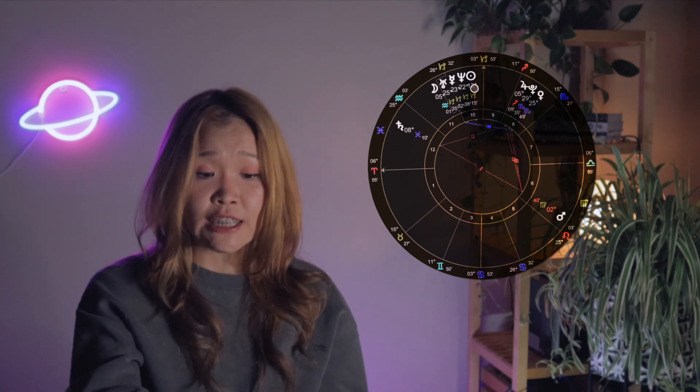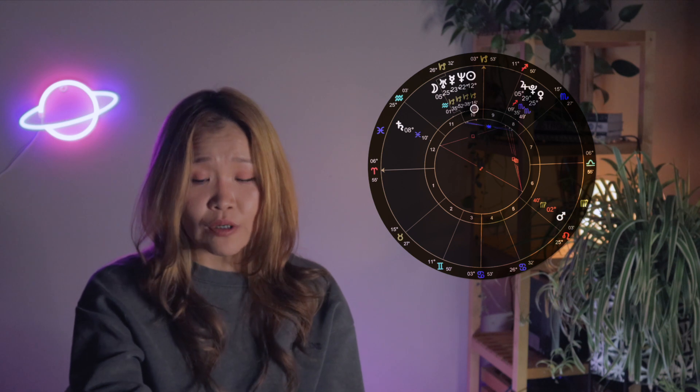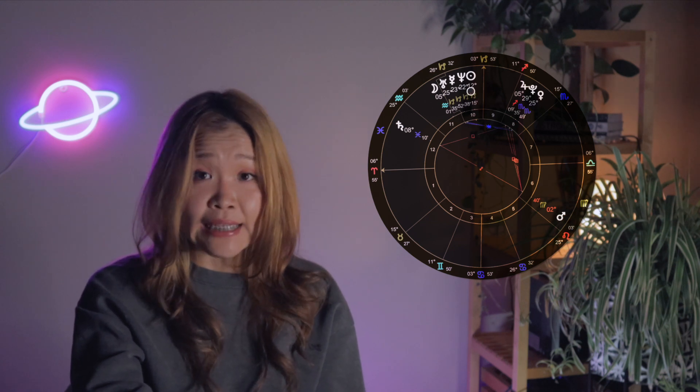In relationship astrology, the Sun can indicate the main male figures in Jisoo's life, possibly her future spouse or significant others. As we discussed, Capricorns are known for being earthy, steady, and grounded. With Jisoo's Sun in Capricorn, it suggests that she is likely to end up with men who embody stability, security, and discipline, along with a strong adherence to traditional family values.